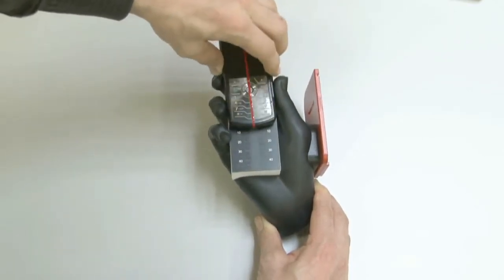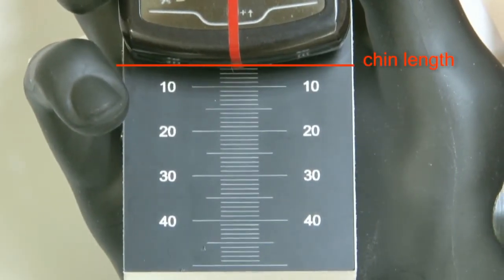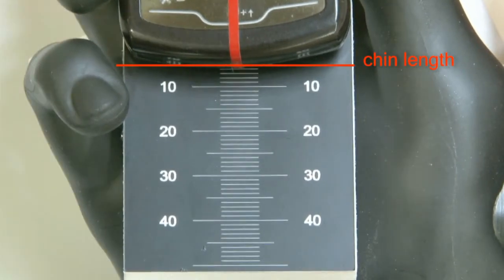Place the device on the spacer and between the fingers of the hand phantoms. The bottom of the device should align with the chin length previously recorded.